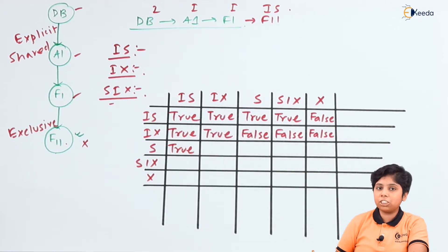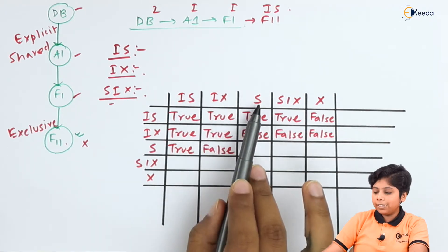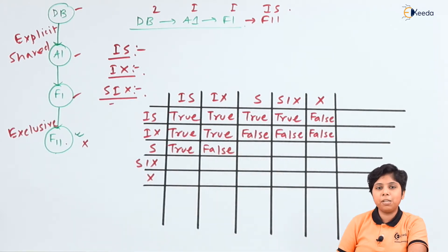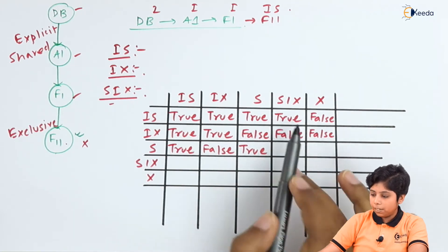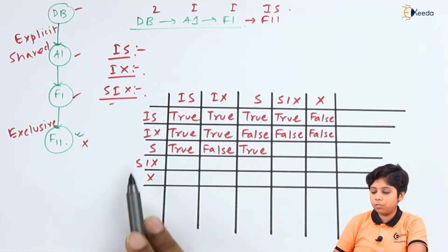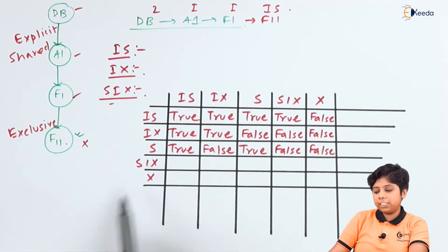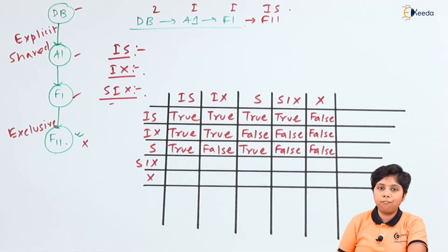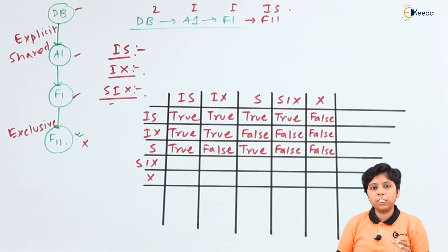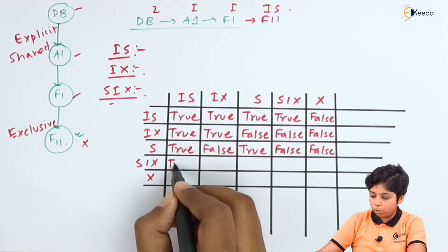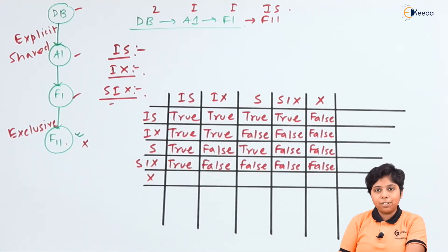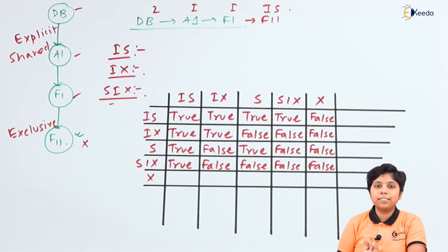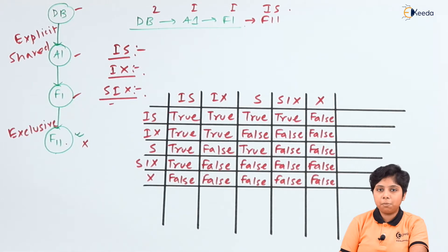Continuing the compatibility matrix: an S lock allows another S lock on the next node but not an exclusive lock. SIX only allows IS on the following node — all other combinations under SIX are false because at the end it will be an intention lock with an exclusive lock at the last level. And if an exclusive lock has already been acquired, no implicit or explicit lock of any type can be granted on any record, file, database, or area. This is the granularity compatibility matrix for these five lock types.